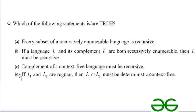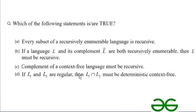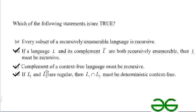Option D: if languages L1 and L2 are regular, then their intersection must be a deterministic context free language. Regular languages are closed under intersection, so the intersection of two regular languages is also regular. And every regular language is also a DCFL, so this statement holds true. The correct answers are B, C, and D.